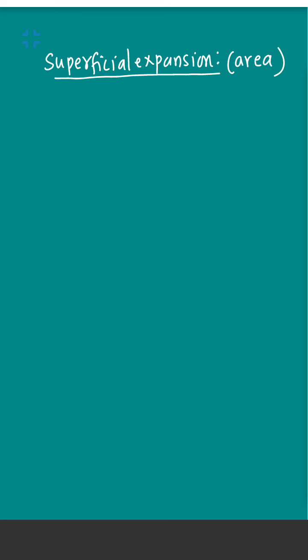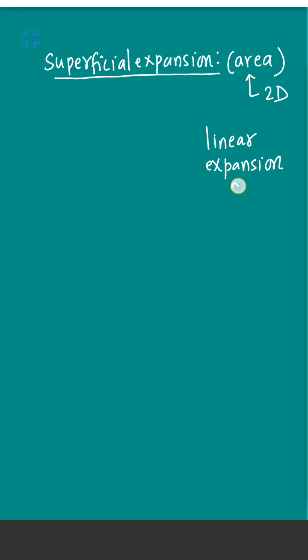Today I am going to discuss Superficial Expansion in Solids. Superficial Expansion is also called Area Expansion and it is a two-dimensional concept, whereas linear expansion, as we studied in the previous lecture, is a one-dimensional concept.